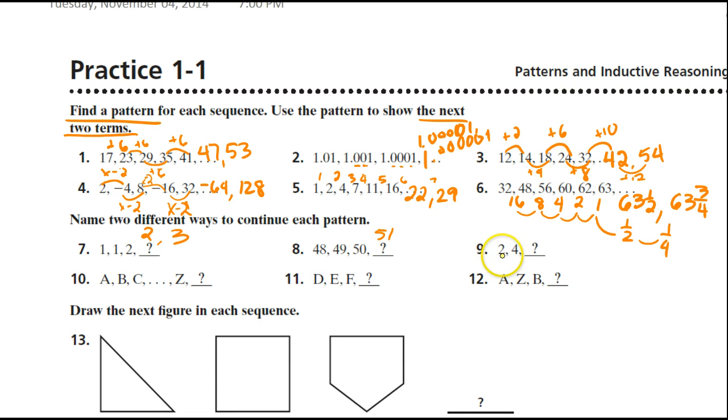Continuing on, number 9. 2, 4. We can continue it with a 6. Or, we could say we're multiplying by 2. So 2 times 2 is 4. 4 times 2 could be 8.